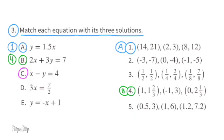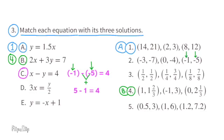C: x minus y equals 4. Negative 1 minus negative 5 equals 4. Minus a negative 5 is like the opposite of negative 5, or plus 5. So this reads negative 1 plus 5 equals 4, or 5 minus 1 equals 4. You'll find the solution with negative 1 and negative 5 in the solutions for number 2. Equation C is a match for the number 2 solutions.